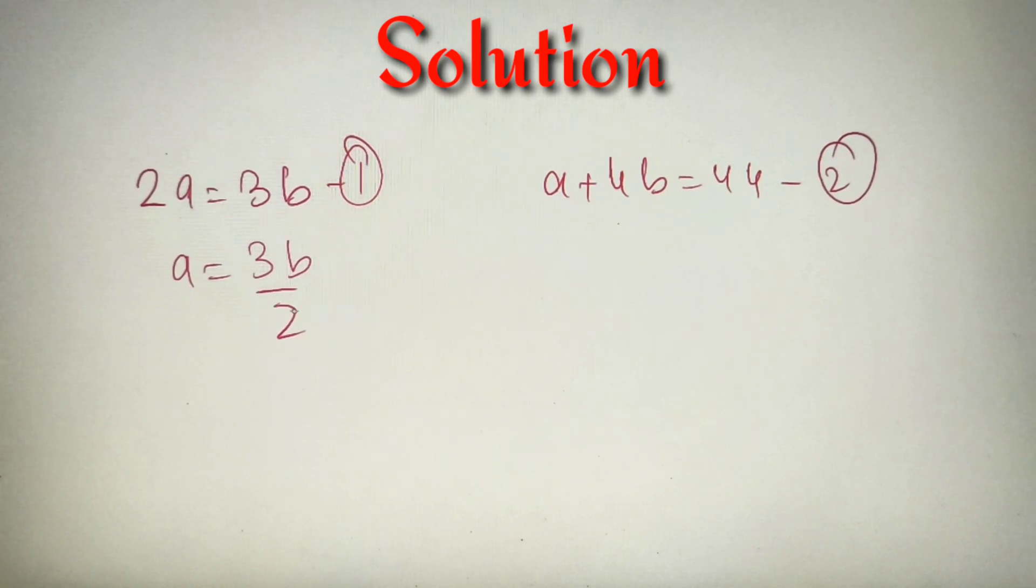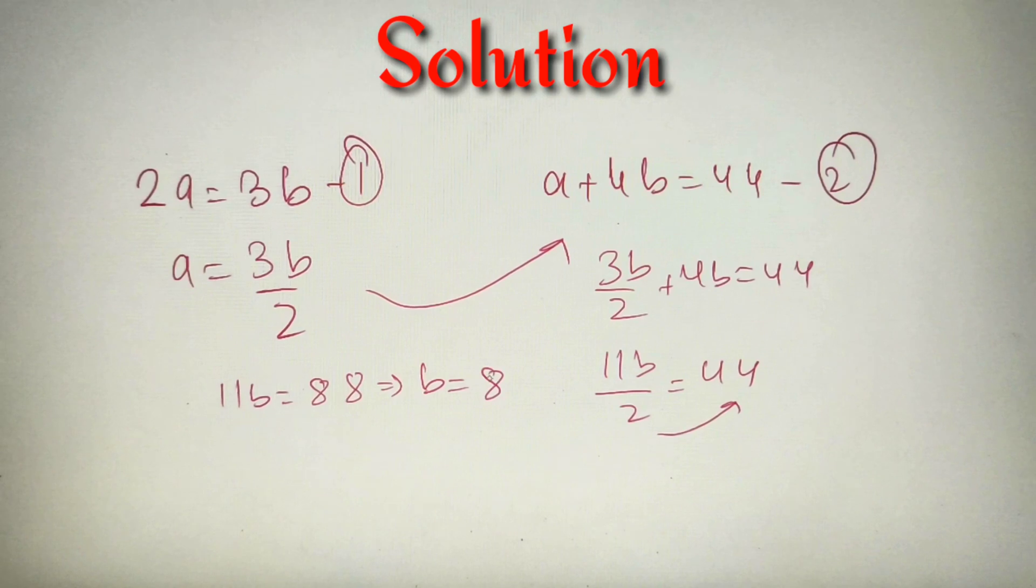We have got the value of A in terms of B, and we can put it in equation number 2. We will get 3B/2 + 4B = 44. Upon taking the LCM, I will get 11B/2 = 44. If I transfer 2 over, I will get 11B = 88, or the value of B equals 8.